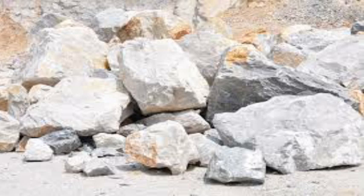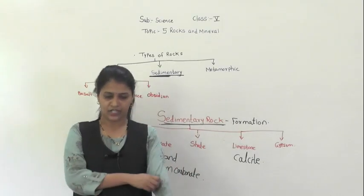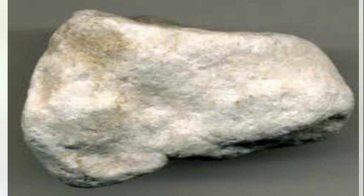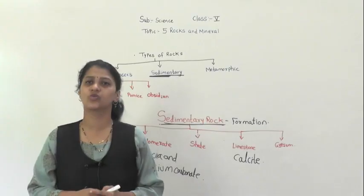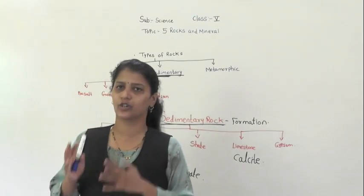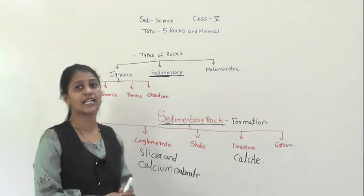The last type of sedimentary rock is gypsum. This is a soft rock made up of a sulphate mineral. It is used for making plaster of Paris. These are the five types of sedimentary rocks and their uses.